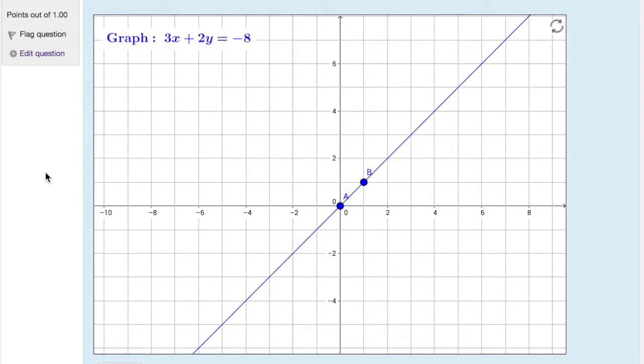These are just some examples of the graphing questions I've created in Moodle. Here you graph a line. The directions say one of the points has to be a y-intercept. When you do this equation, the y-intercept is negative 4, so you can drag one of the points down to negative 4. The slope is negative 3 over 2, so either down 3 and right 2, or up 3 and back 2.